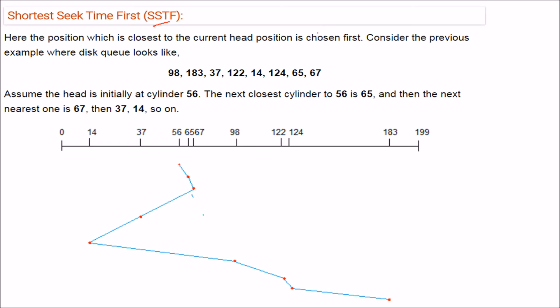This is the Shortest Seek Time First, SSTF. You have the position which is closest to the current head position is chosen first. Again, position which is closest to the current head is chosen. So just consider the example where this disk is like this. Same example we are taking. And we are again taking that it is at 56. So the next closest to 56 is what? See here. The next closest to the 56 is 65.